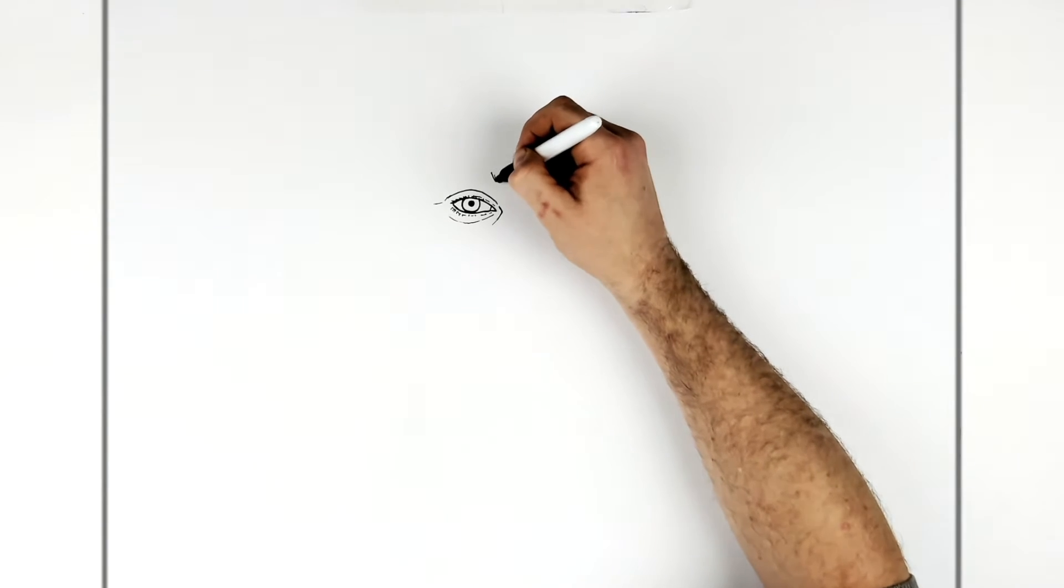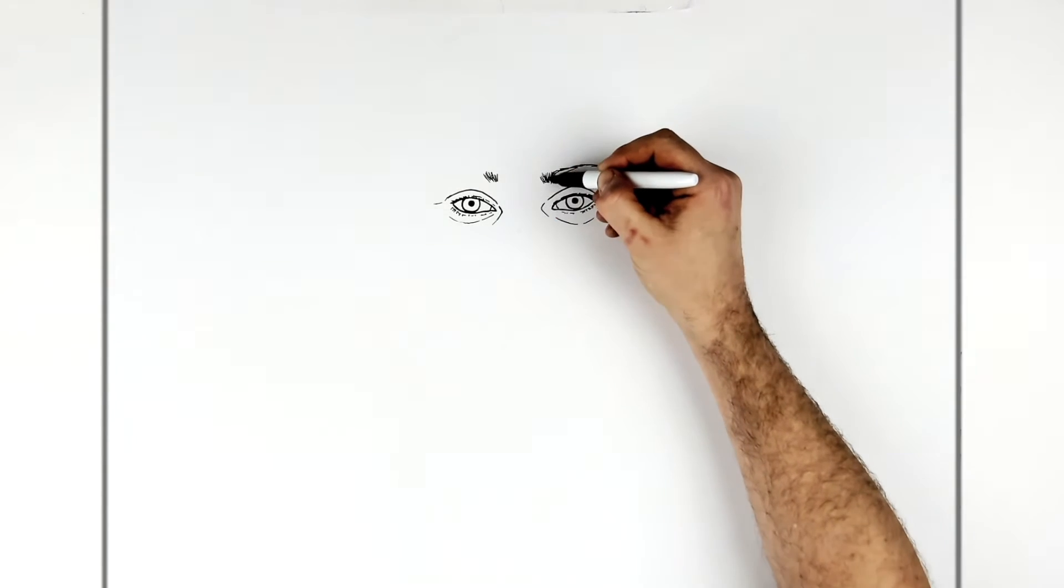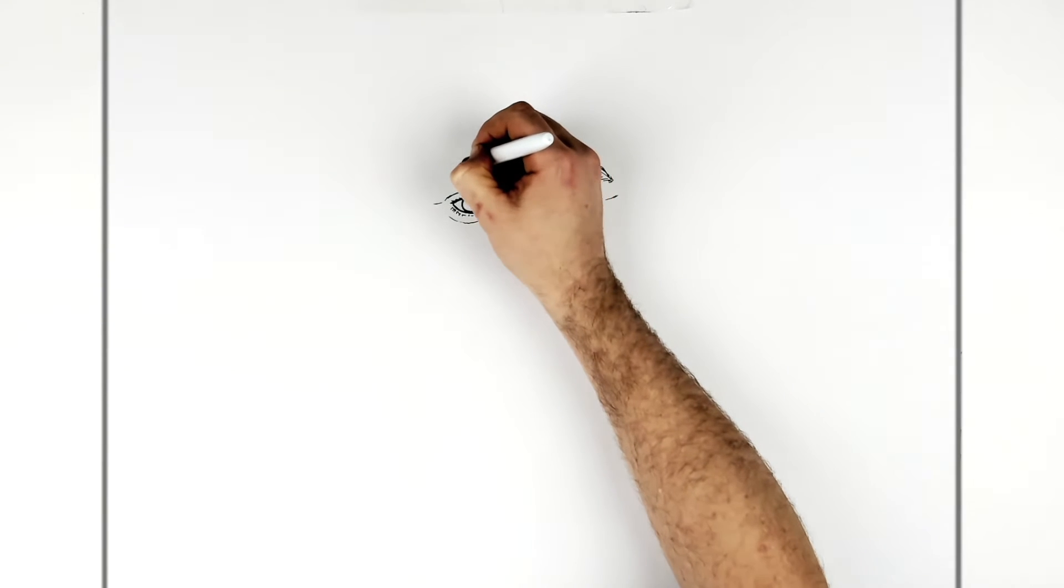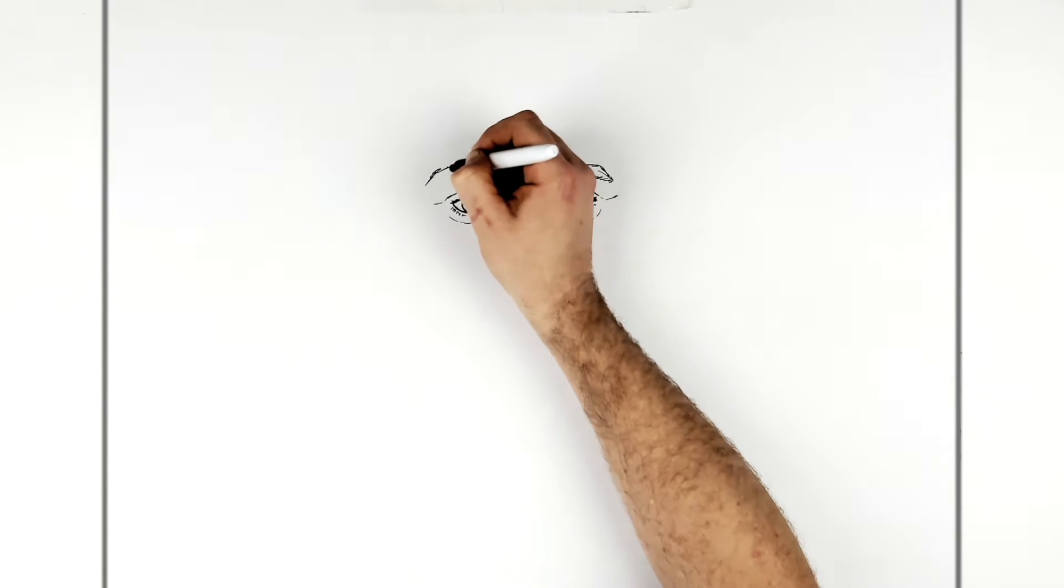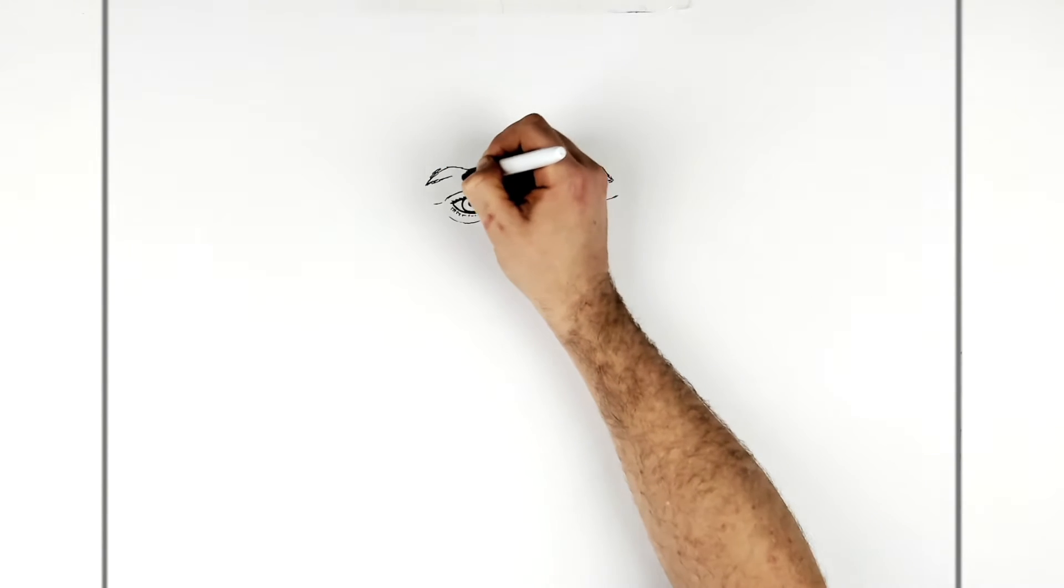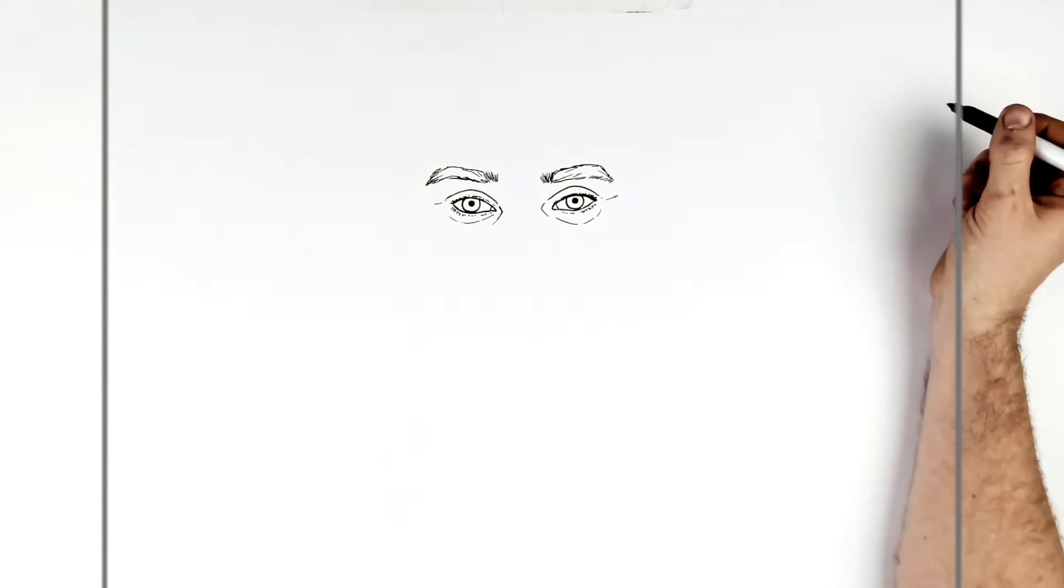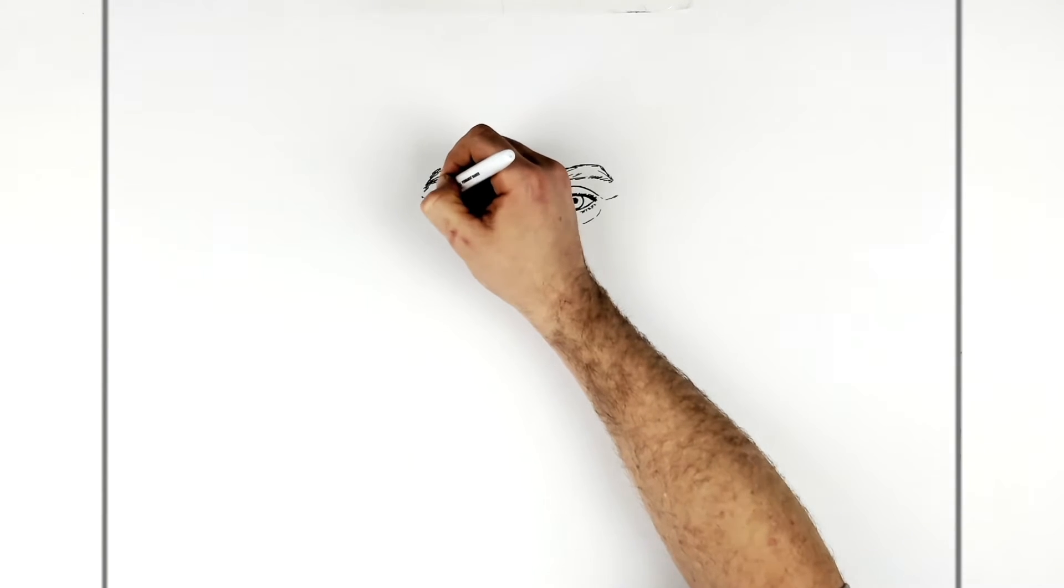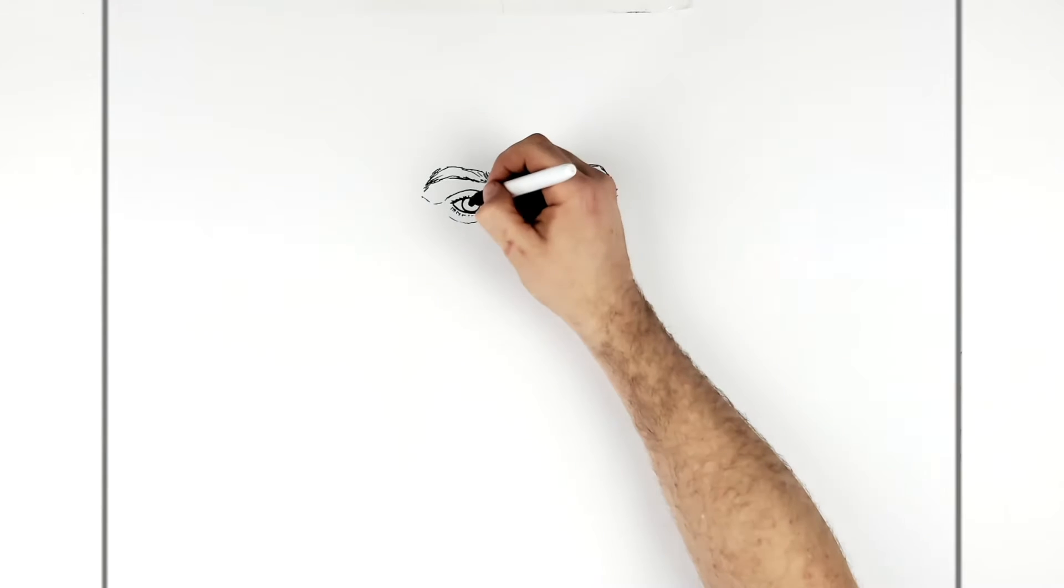So then eyebrow again. Hairy sort of section at the front here, just over like his tear duct. This way. And then it starts to go sort of back this way. And then down. And then back towards the front. Just like his brow sort of area, coming around here.